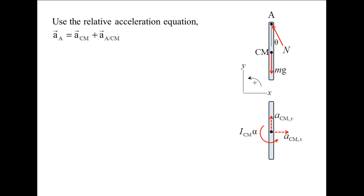The acceleration of point A is equal to the acceleration of the center of mass plus the acceleration of point A relative to the center of mass. Although we do not know the magnitude of point A's acceleration, we do know point A must accelerate along the surface. The acceleration of point A is decomposed into its x and y components. The x component is the magnitude of acceleration times cosine theta and points in the negative x direction. The y component is the magnitude times sine theta and points in the negative y direction.